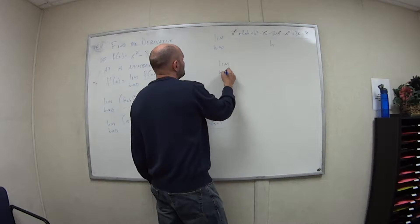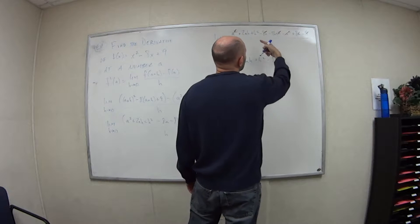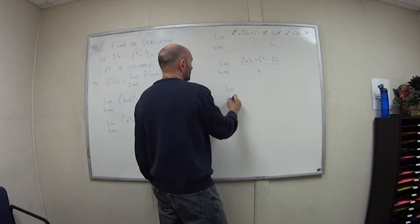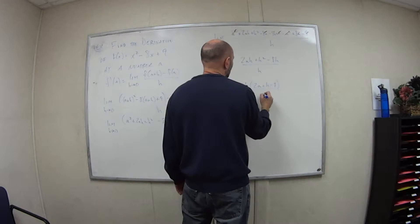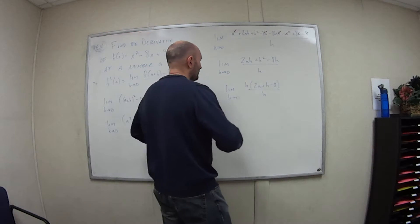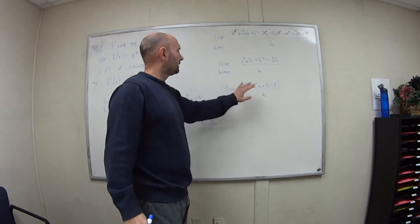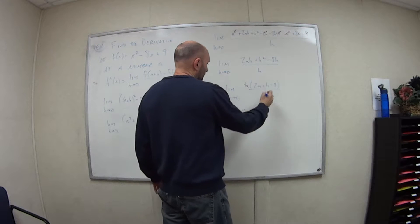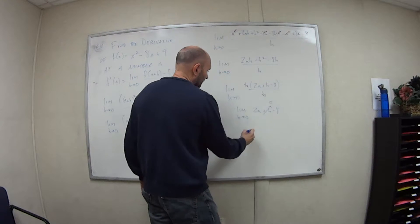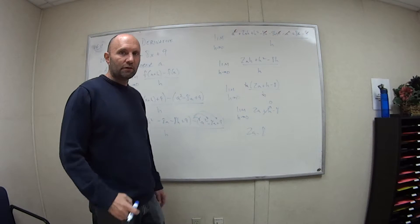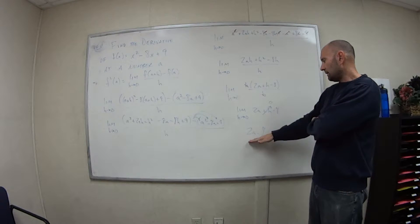So now we have limit as h approaches 0: 2ah plus h squared minus 8h, and that's it, all over h. So the limit as h goes to 0, factor an h out of the numerator. So you get 2a plus h minus 8, all over h. Again, this is what we hopefully get. We want to be able to cancel the h's because h is going to 0. So if I have a 0 in the denominator, I've got big troubles. So now I have the limit as h goes to 0 of 2a plus h minus 8. Because h is going to 0, this piece goes to 0, and I'm left with 2a minus 8. Hopefully that's the answer you got.